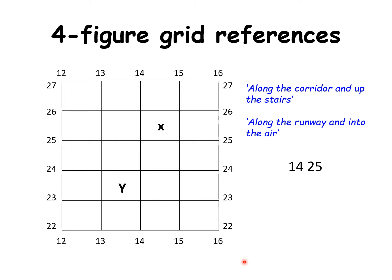Let's try another one. So what square is Y in? We start with the along number. So 12 is the first column, 13 is the second, so it's 13. And then we go to the side. 22 is the first row, so it's 23. And that gives us 1323 is the square that Y is in.